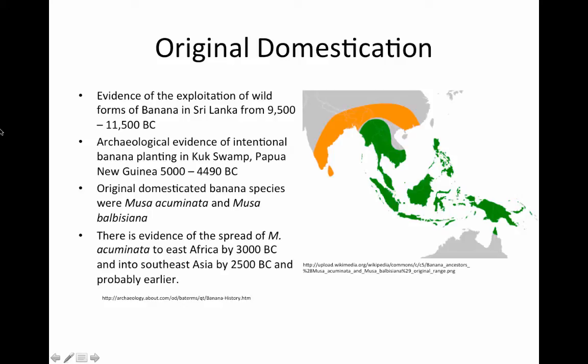There is evidence of the banana originally being used in Sri Lanka from 11,500 B.C. to 9,500 B.C. There is evidence of intentional banana planting, however, in the Kuk Swamp of Papua New Guinea as early as 5,000 B.C.